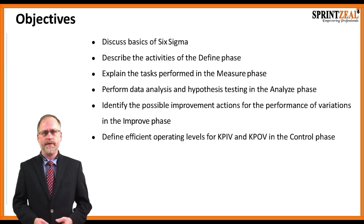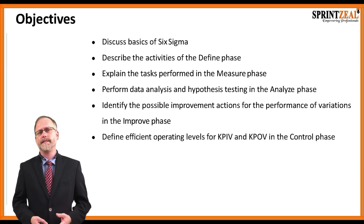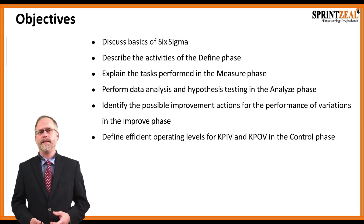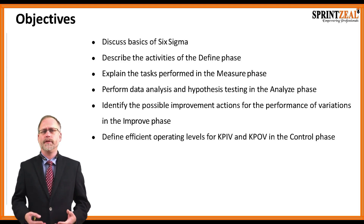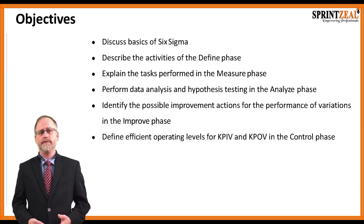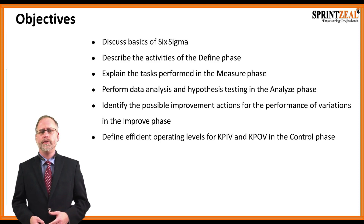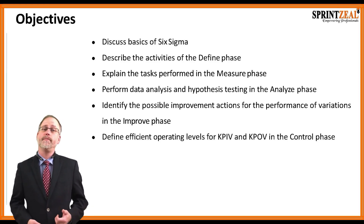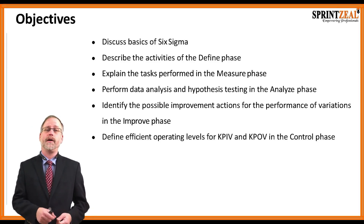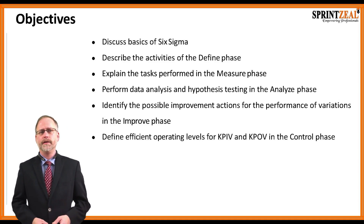By the end of this course we will discuss the basics of Six Sigma, describe the activities of the Define phase, explain the tasks performed in the Measure phase, perform data analysis and hypothesis testing in the Analyze phase. We're going to identify the possible improvement actions for the performance of variation within the Improve phase, and then define efficient operating levels for KPIVs — key process input variables — and KPOVs — key process output variables — within the Control phase.